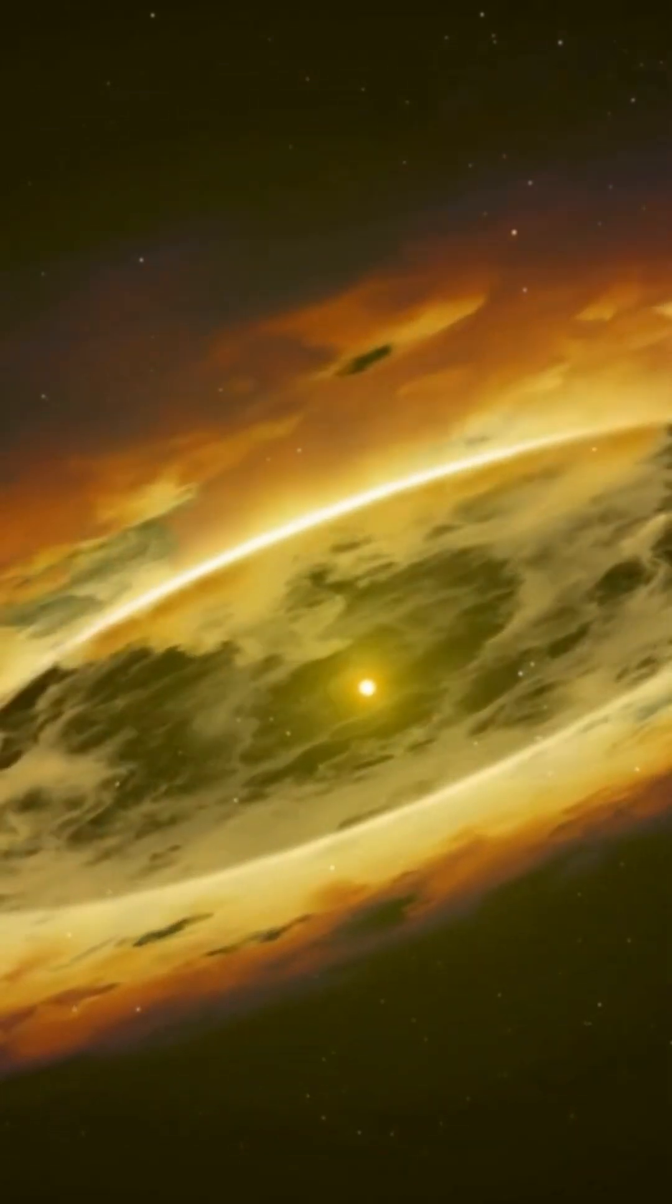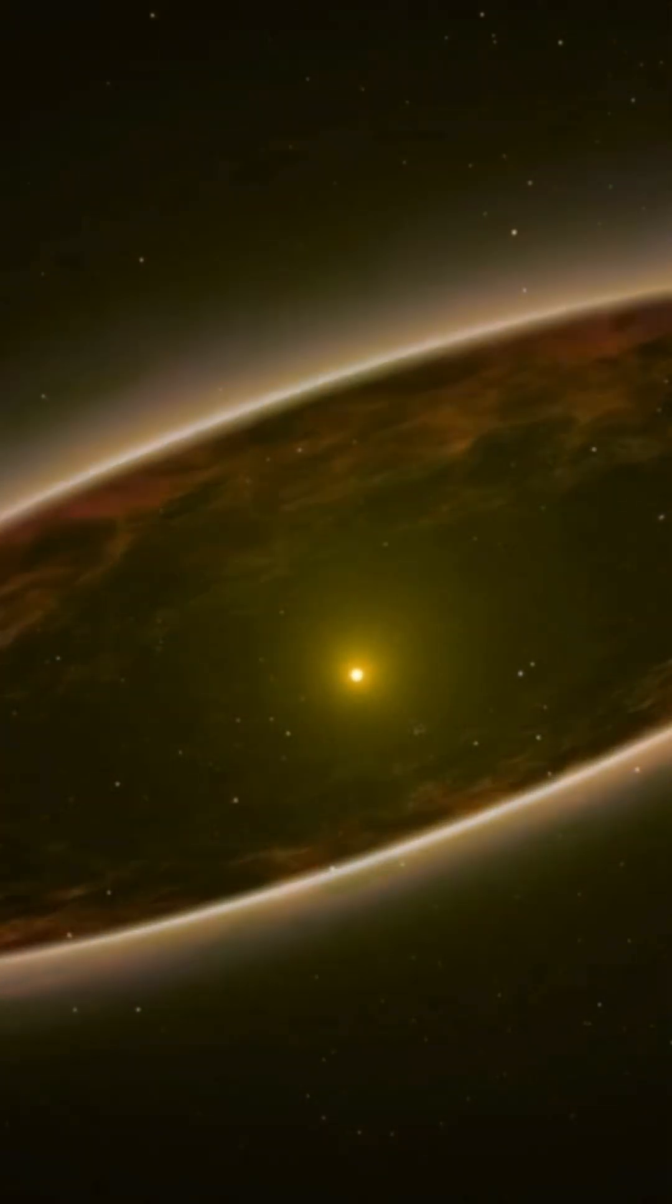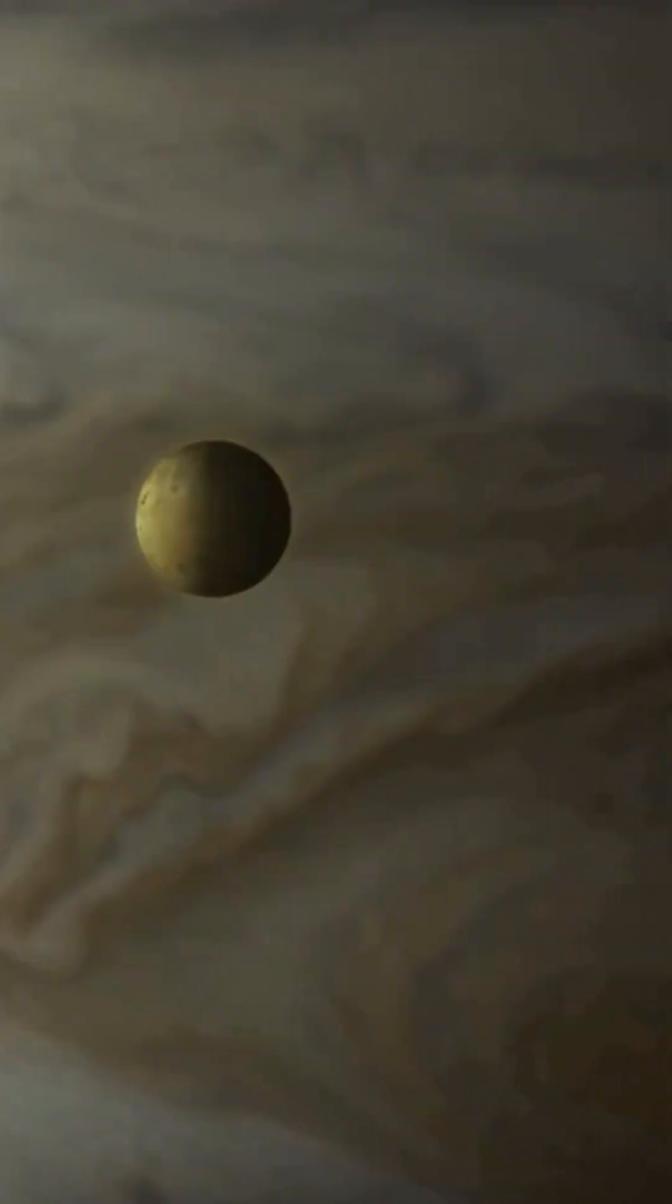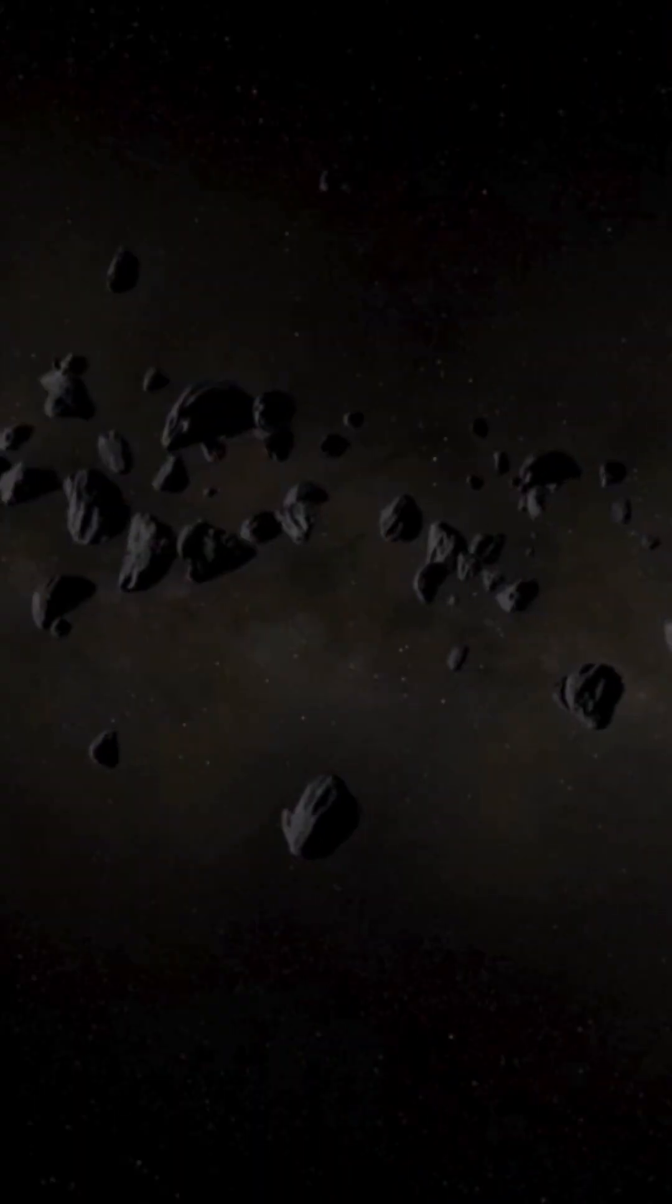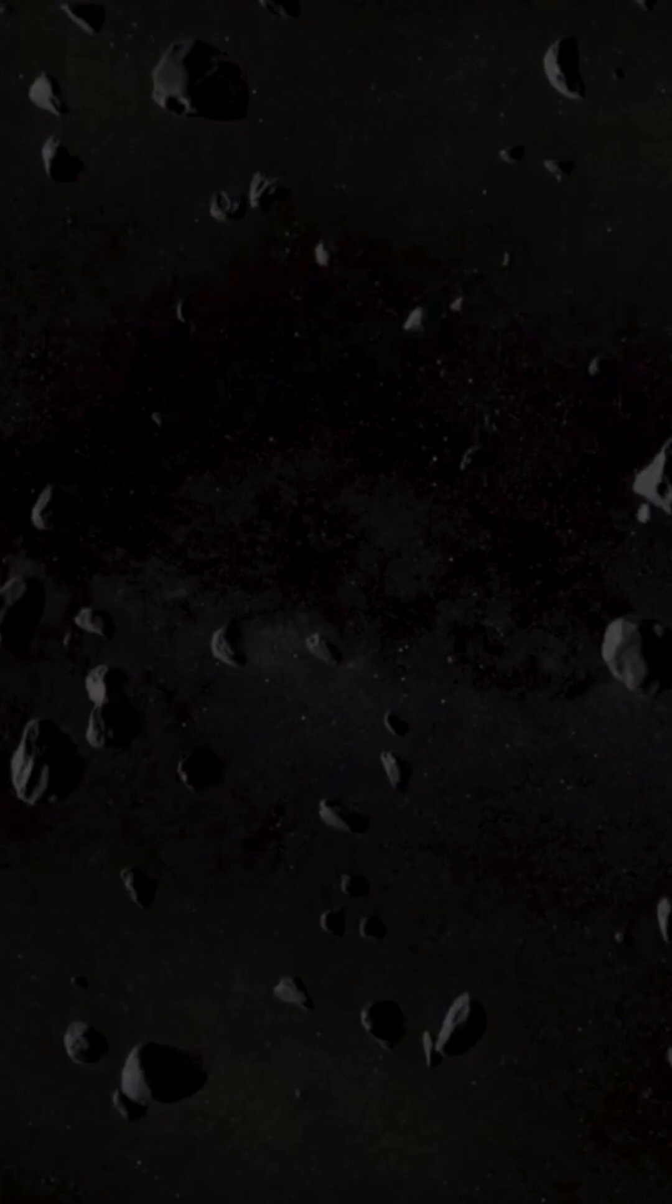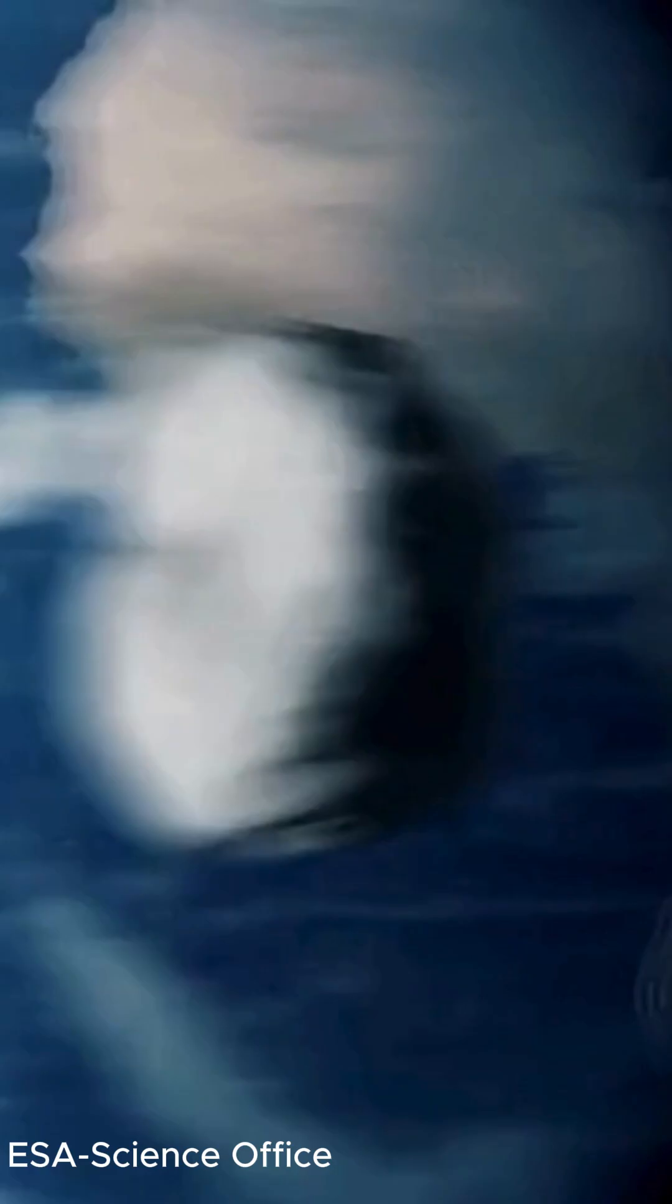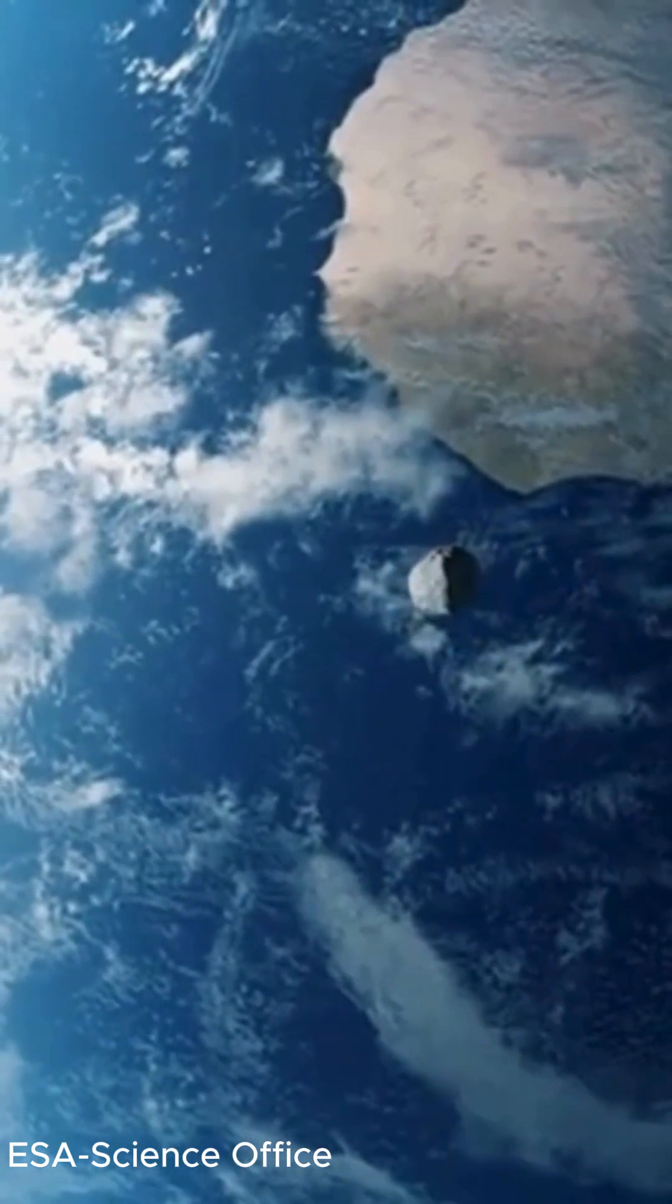That's why NASA is launching the NEO Surveyor. It's an infrared hunter designed to spot dark asteroids that are hiding in the sun's glare. We have moved from observation to interception. With early warning systems and kinetic impactors, we are building the first real shield in planetary history.